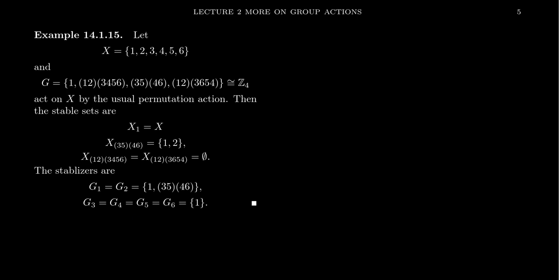Let's look at some examples of these stable sets. Take the set X = {1, 2, 3, 4, 5, 6} with the usual permutation action. We're not going to do all of S6 — we'll take a subgroup isomorphic to Z4 consisting of: the identity, the permutation (1 2)(3 4)(5 6) — a 2-cycle times a 4-cycle — then (3 5)(4 6), and then (1 2)(3 6 4 5). You can verify this is in fact a subgroup, and G acts on X by the usual permutation action.